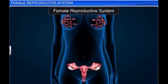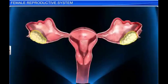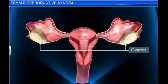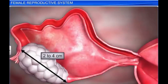Let us study each organ in detail. The female reproductive system includes a pair of ovaries, located one on each side of the lower abdomen. They are the primary sex organs, as they produce the ovum, or the female gamete. Each ovary is about 2 to 4 centimeters in length. They are connected to the pelvic wall and the uterus by ligaments called mesovarium.